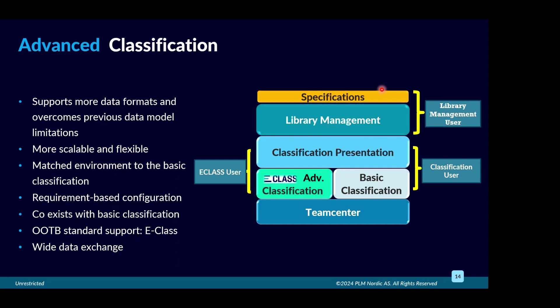We also have library management and specifications, which were in the basics but are now very well integrated. A good thing is it's the same license — if you already have a classification license, you don't need a new license, just like a Teamcenter author license works for both rich client and active workspace. You do need add-on licenses for e-class, AI, and library management if you need those extra functionalities.